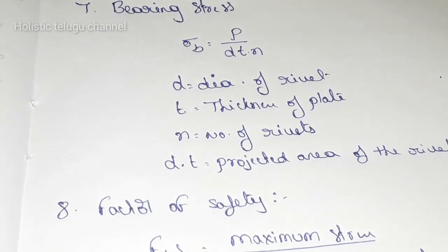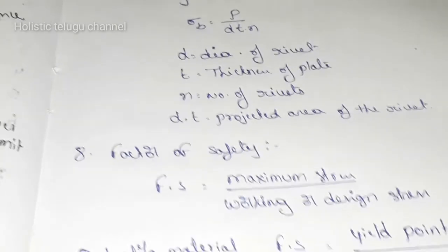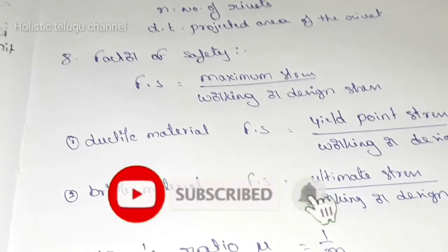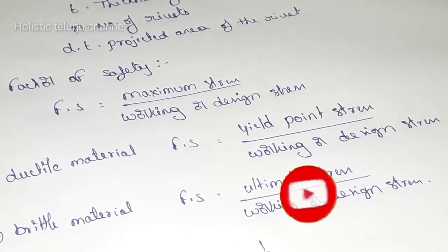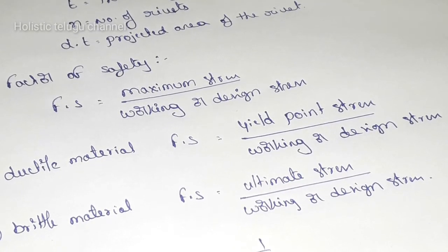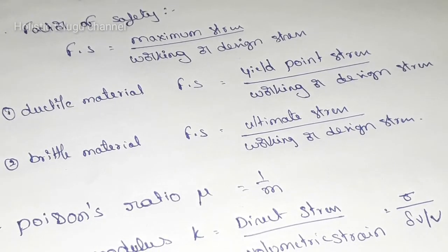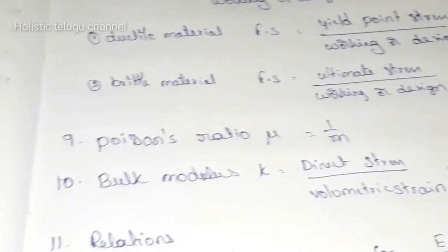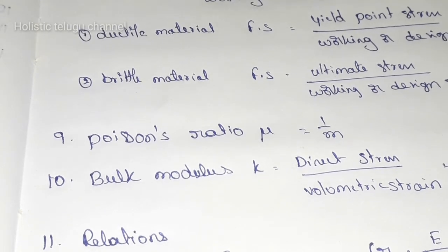Next, factor of safety. Factor of safety is maximum stress by working or design stress. For ductile material, yield point stress by working or design stress. For brittle material, ultimate stress by working or design stress. Next, Poisson's ratio mu equals 1 by M.